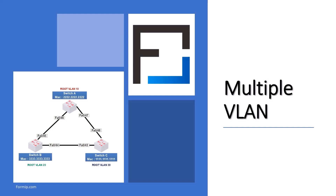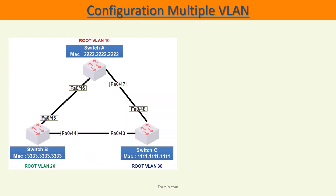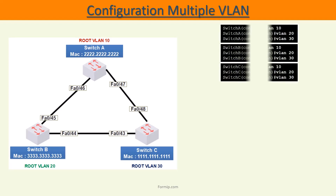In this lesson, we will see how the Spanning Tree manages multiple VLANs. Here we have three switches which have been reset to their factory settings. We will create VLAN 10, 20, and 30 on each of the switches.